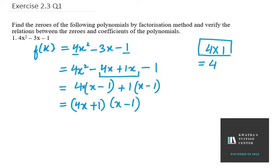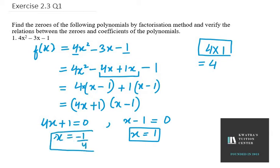So here we have two values: 4x plus 1 equals 0 and x minus 1 equals 0. From the second we get x equals 1. From the first we get x equals minus 1 over 4.